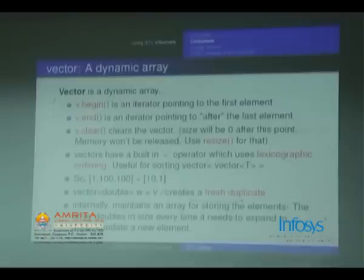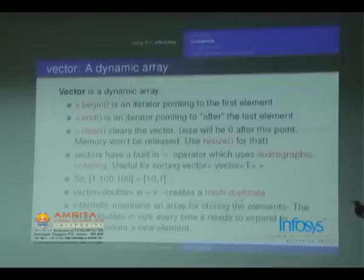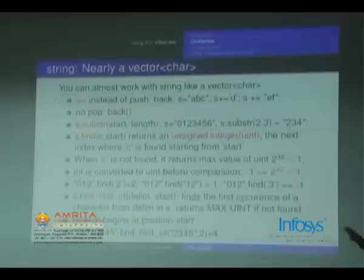You can assign vector<double> w = v; even if it is a double it will type cast int and such. Internally, vector maintains an array for storing elements. When push_back is called and the array is already full, it automatically doubles the size — or something like that; this is roughly enough to understand.